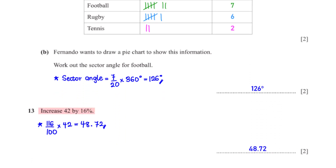Increase 42 by 16%. To get the new value we add 16 to 100, giving 116%. So we have 116% times 42, which equals 48.72.